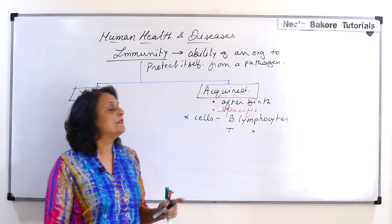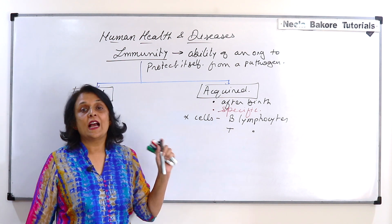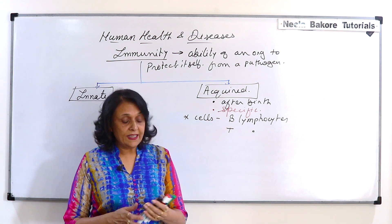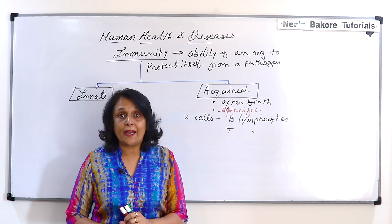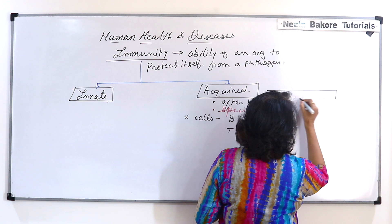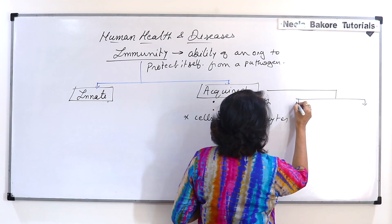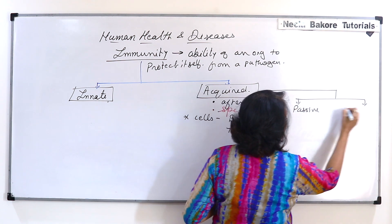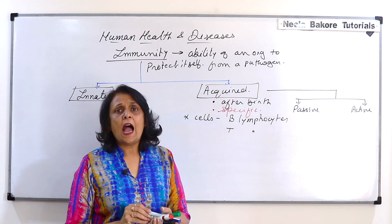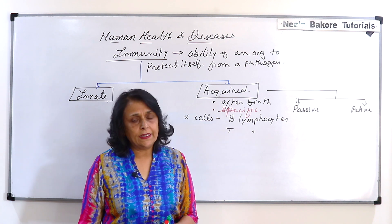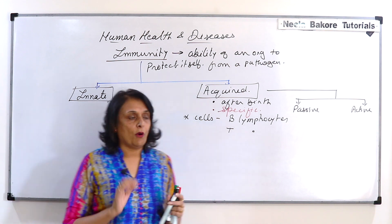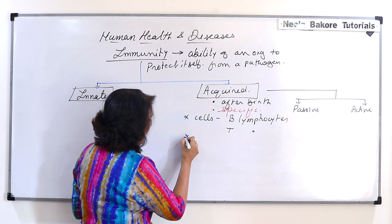How that happens we will see a little later. Acquired immunity is specific and can be obtained in two ways — passive and active. Passive means our body is not going to do anything; we are going to get ready-made antibodies. For that we need to understand antibodies.